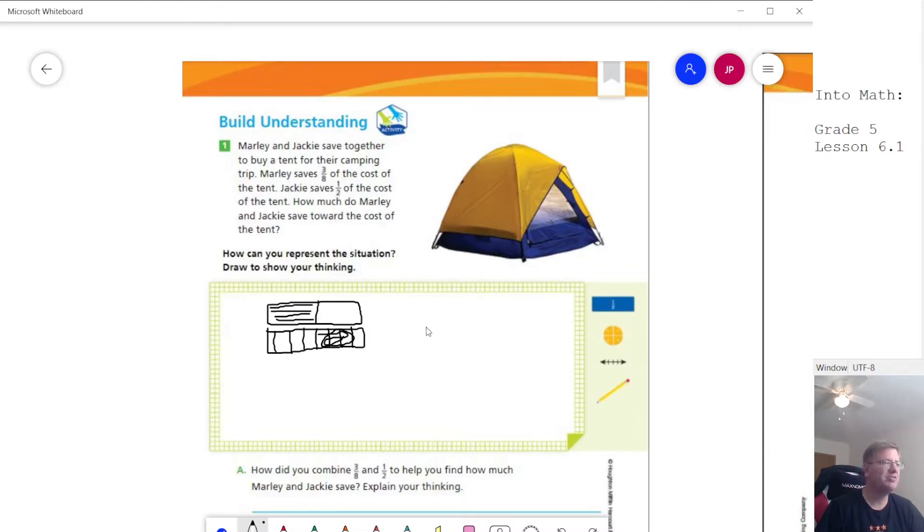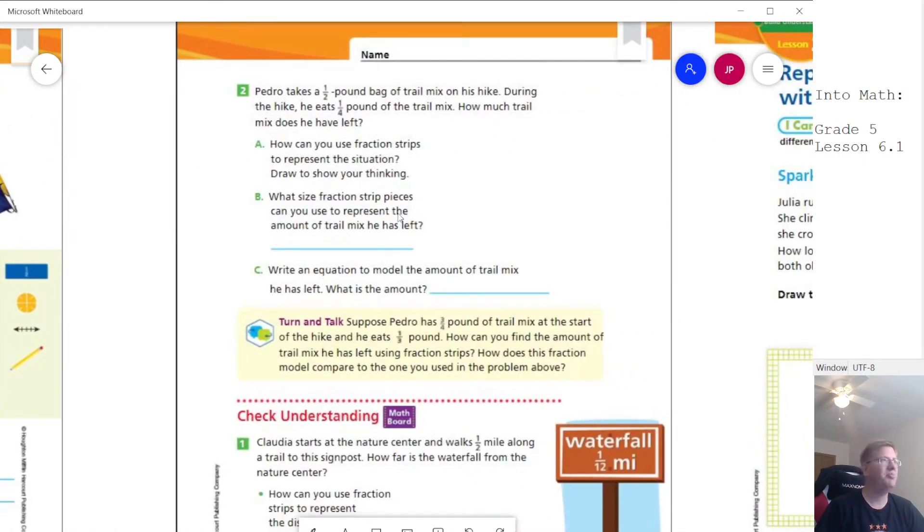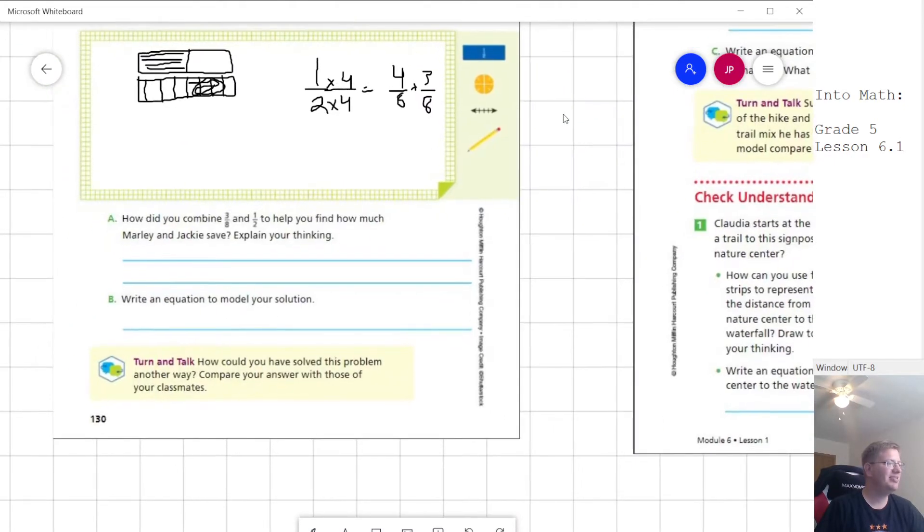We could also change this fraction. So one of the things that we worked on last year would be multiplication to find an equivalent fraction. So it could look a little bit like this. And so our one half is worth four parts out of eight, and then we could do four eighths plus three eighths to get seven eighths. So those are two things that we'll be using a lot. That's the other way that we could solve the problem for the question that's down here at the bottom.